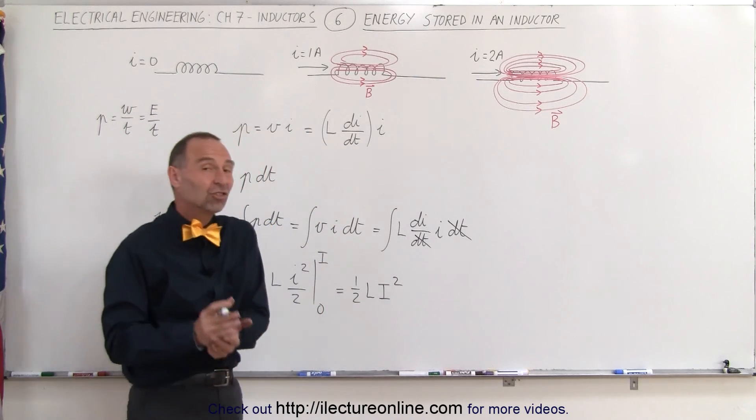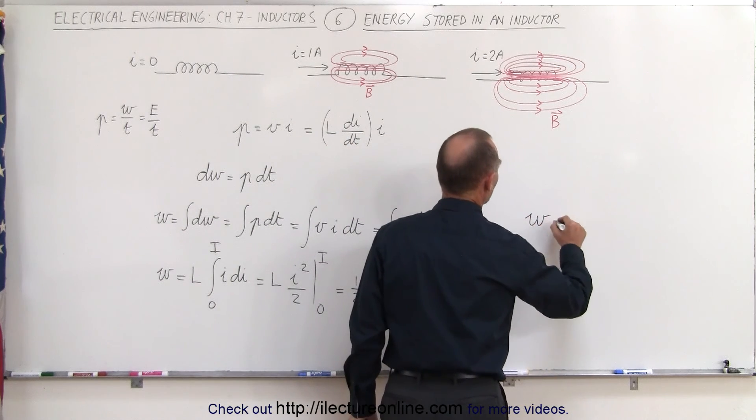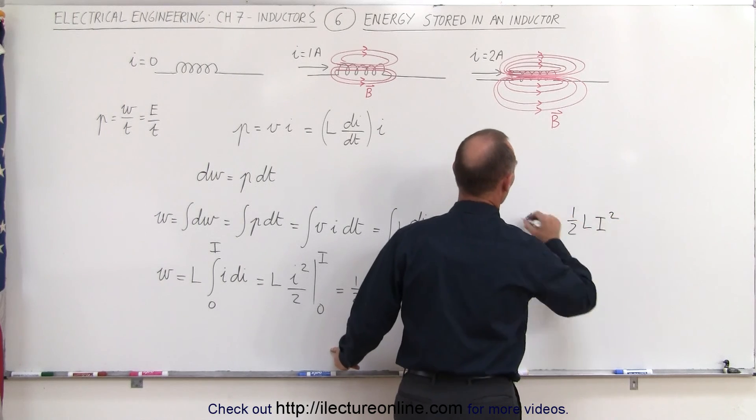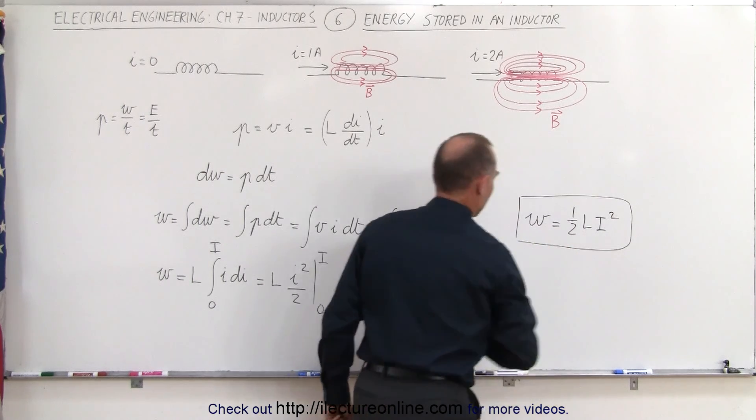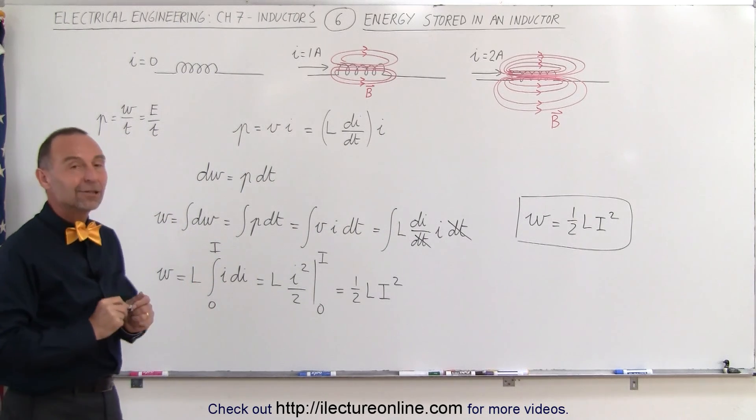So in other words, the energy stored inside of an inductor, we can either write as W or E, is equal to 1/2 the inductance times the current squared. And that's how it's done. That's how we find the energy stored in an inductor.